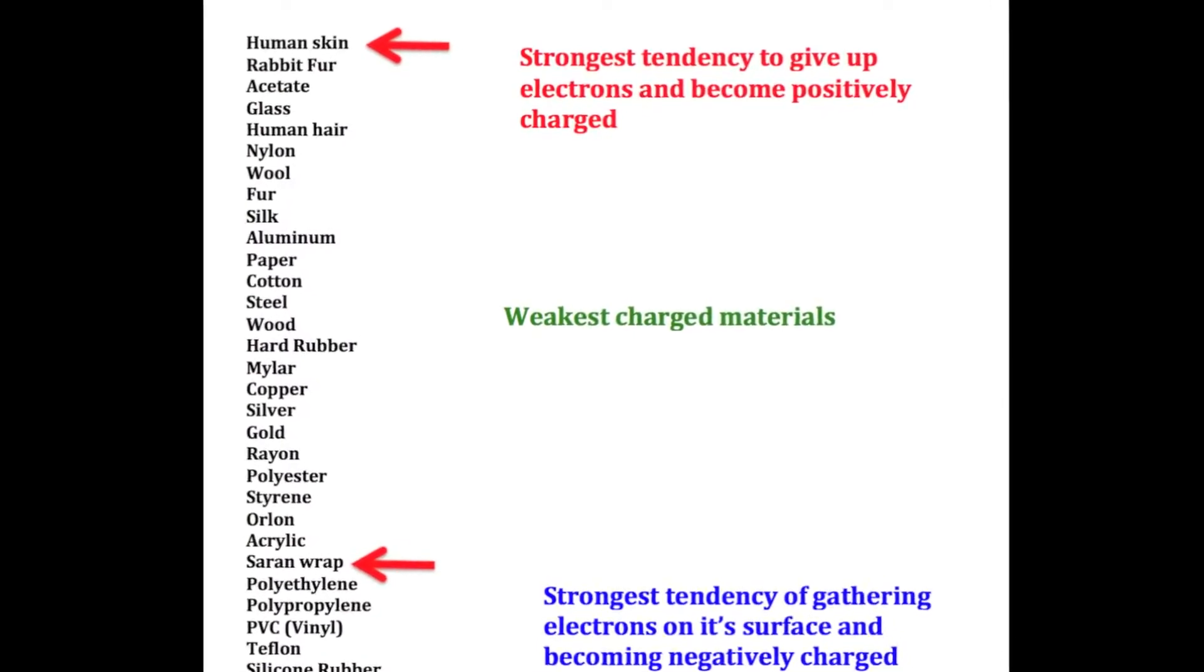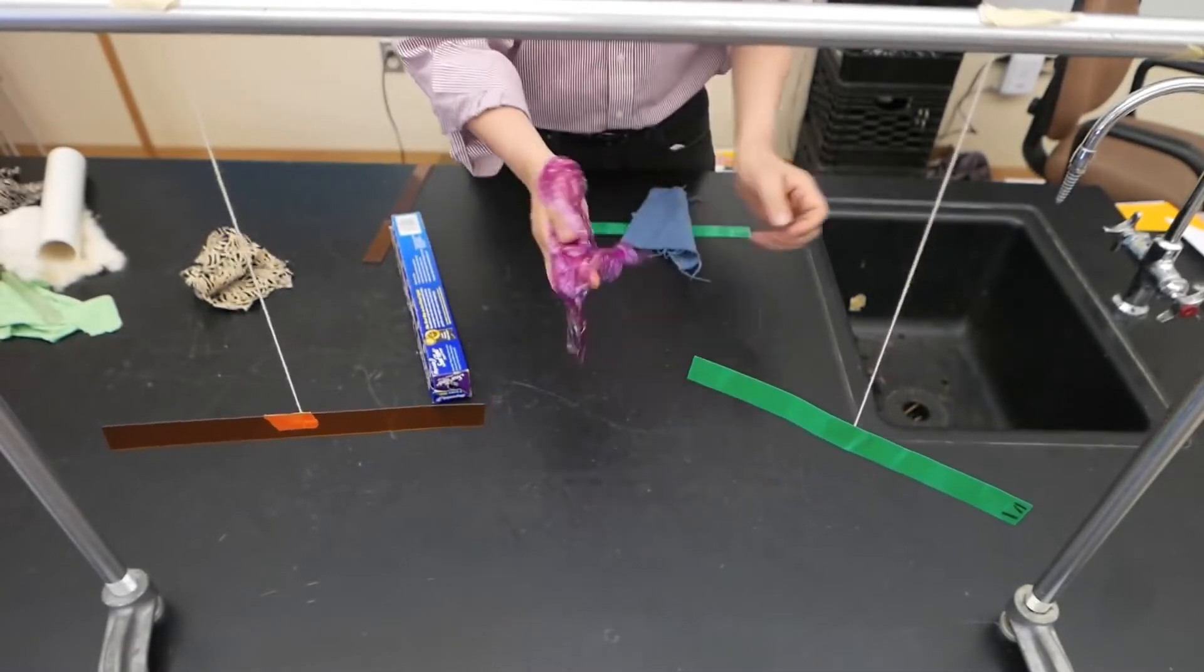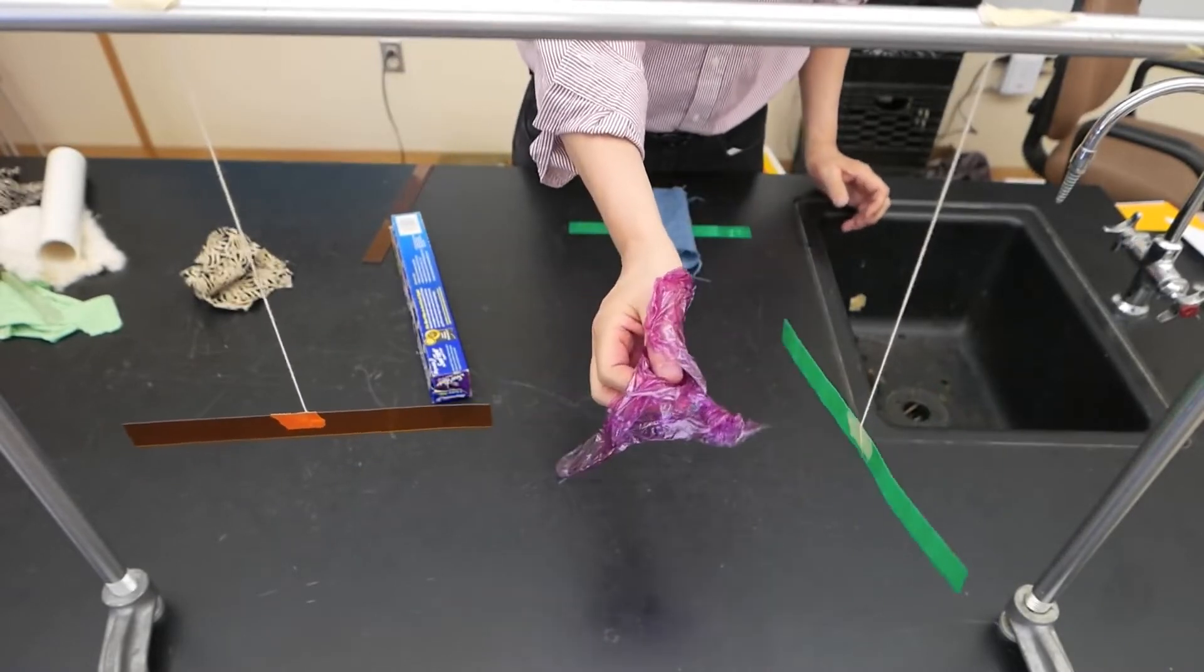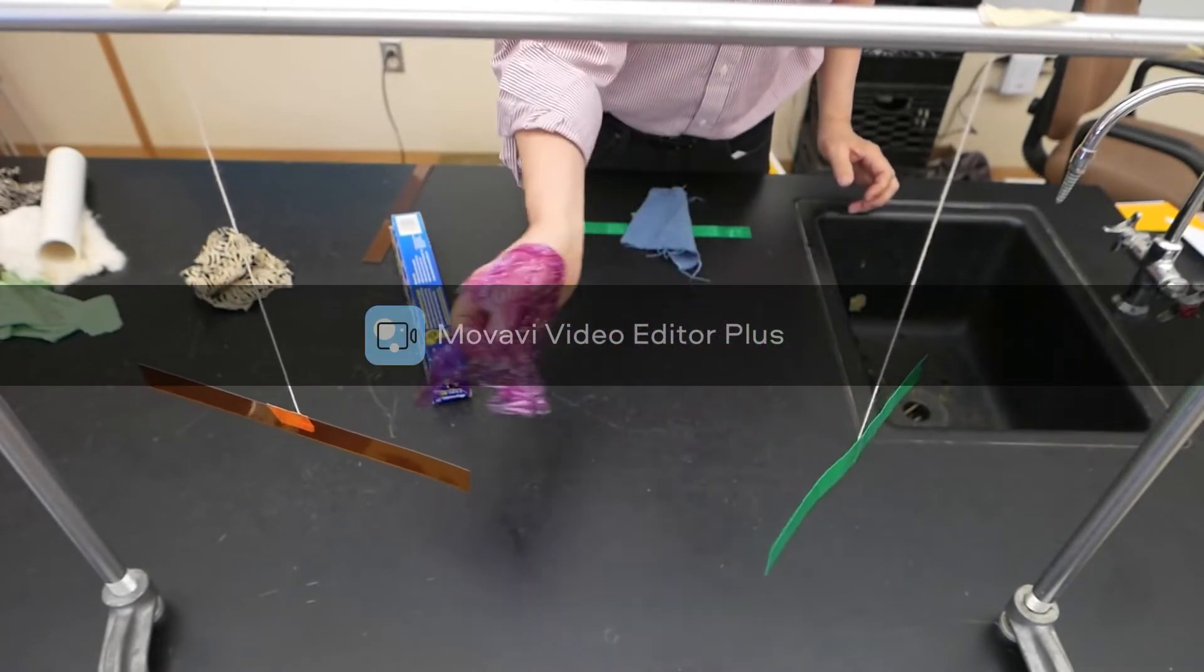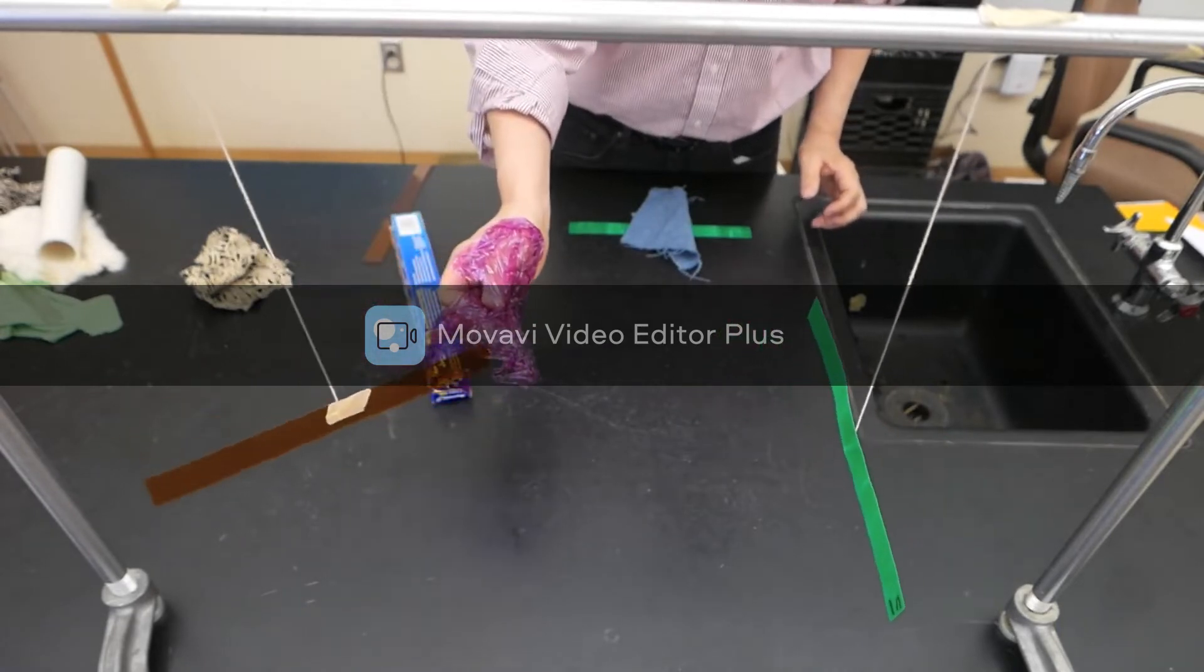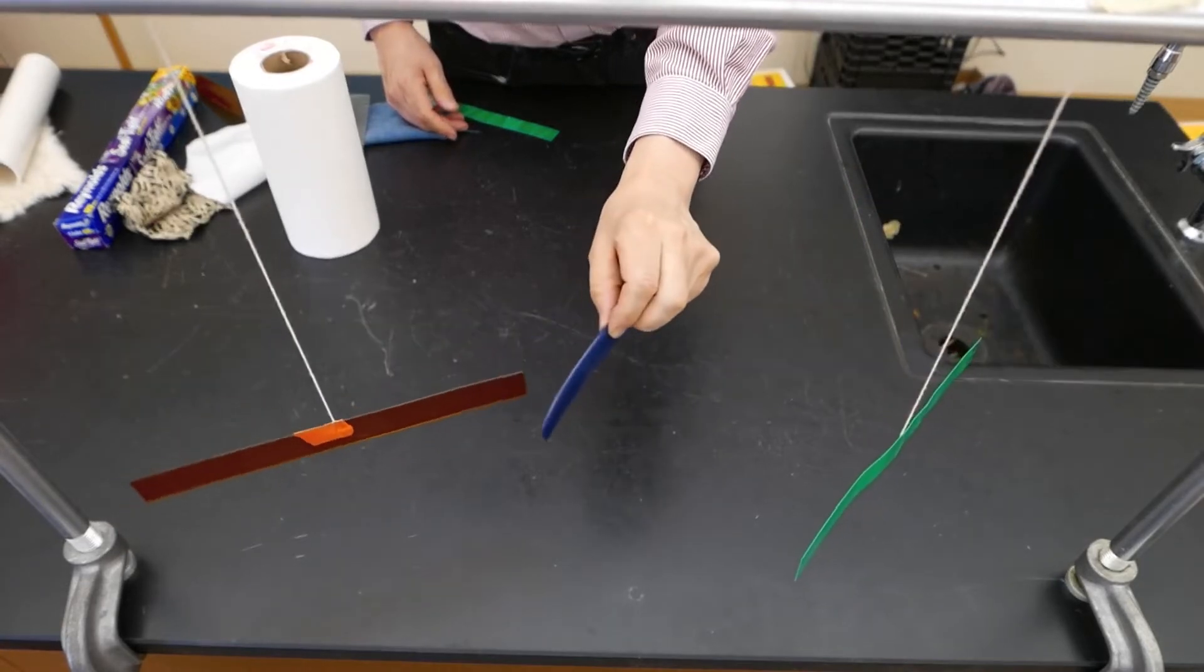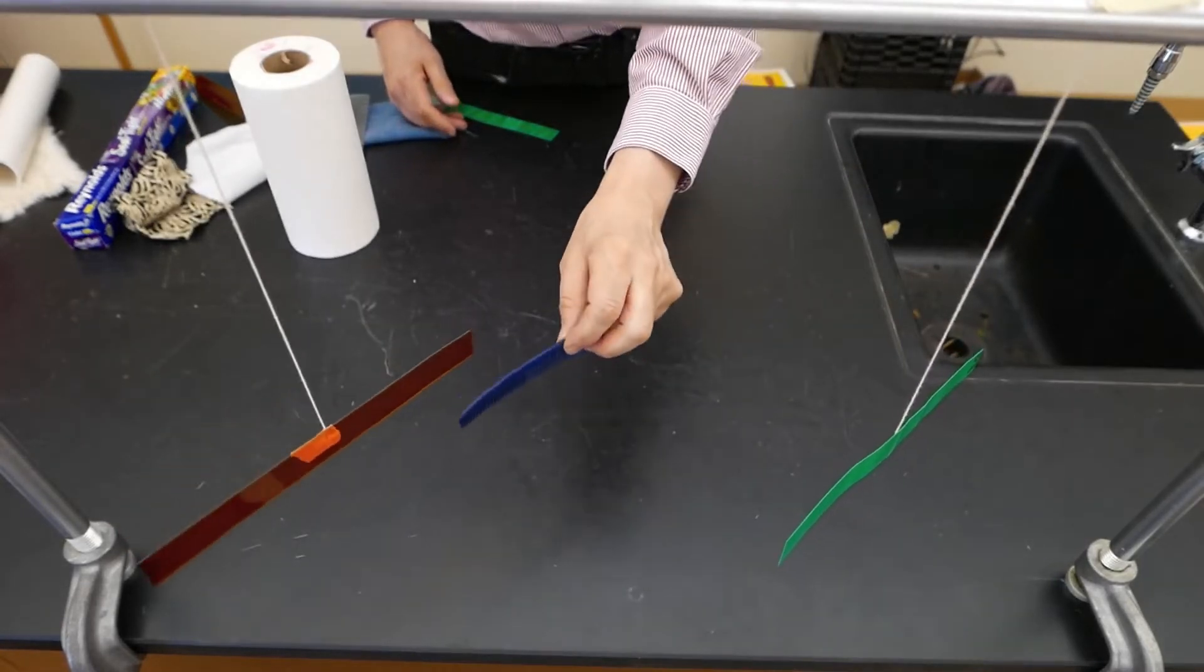Let's try two more. I'm going to take saran wrap and rub it against my hand. And the saran wrap should become negatively charged. And that's what we see here. It's pushing the vinyl, but it's attracting the acetate. I rub this comb through my hair a few times. It pushes away the vinyl and attracts the acetate, which means it must be negatively charged.